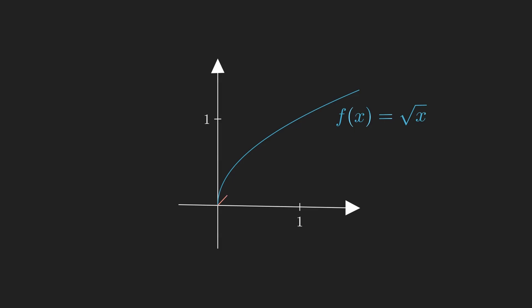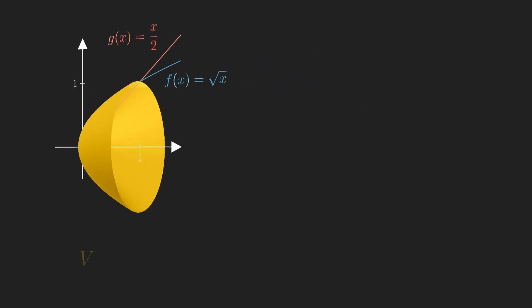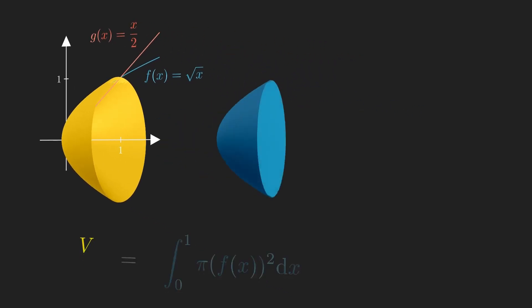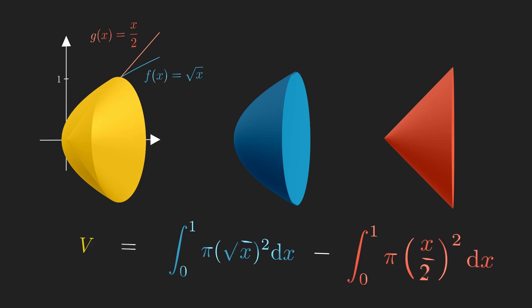Now let's combine these concepts and take an outer function of f of x equals root x and g of x equals x over 2. The area between those curves is now going to be revolved, and now let's find the volume. Well, this is going to be the outer function's revolution volume subtracted by the inner function's revolution volume as you see follows. Compute these integrals separately and taking their difference will result in our final desired volume, and in this case we will result in 5 pi over 12.